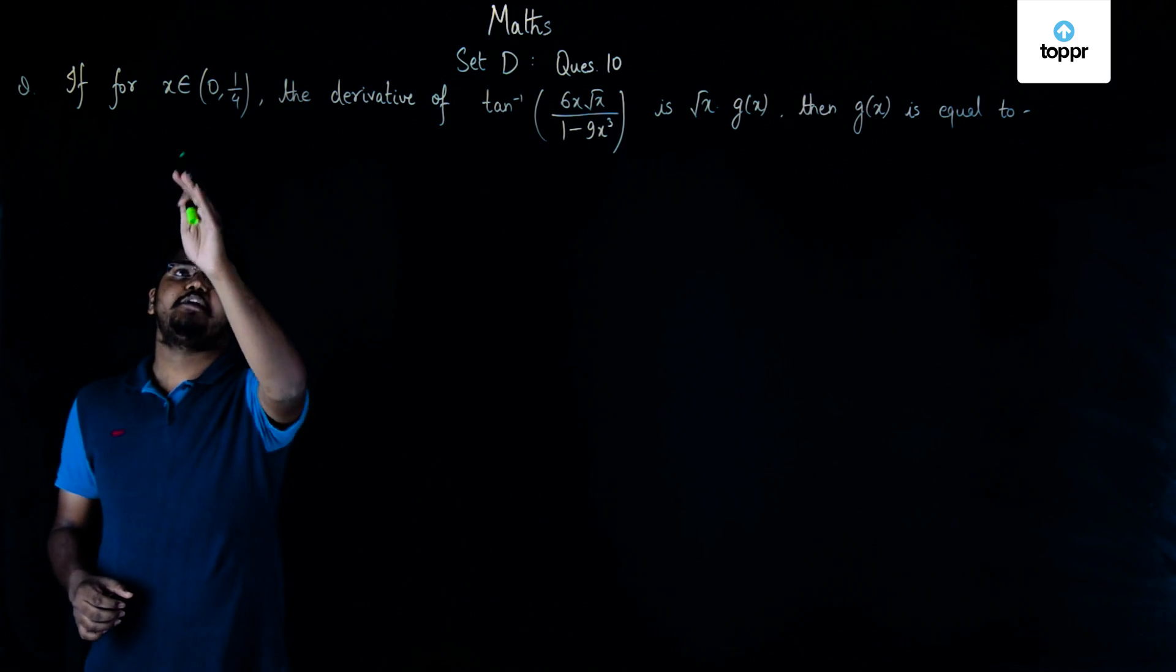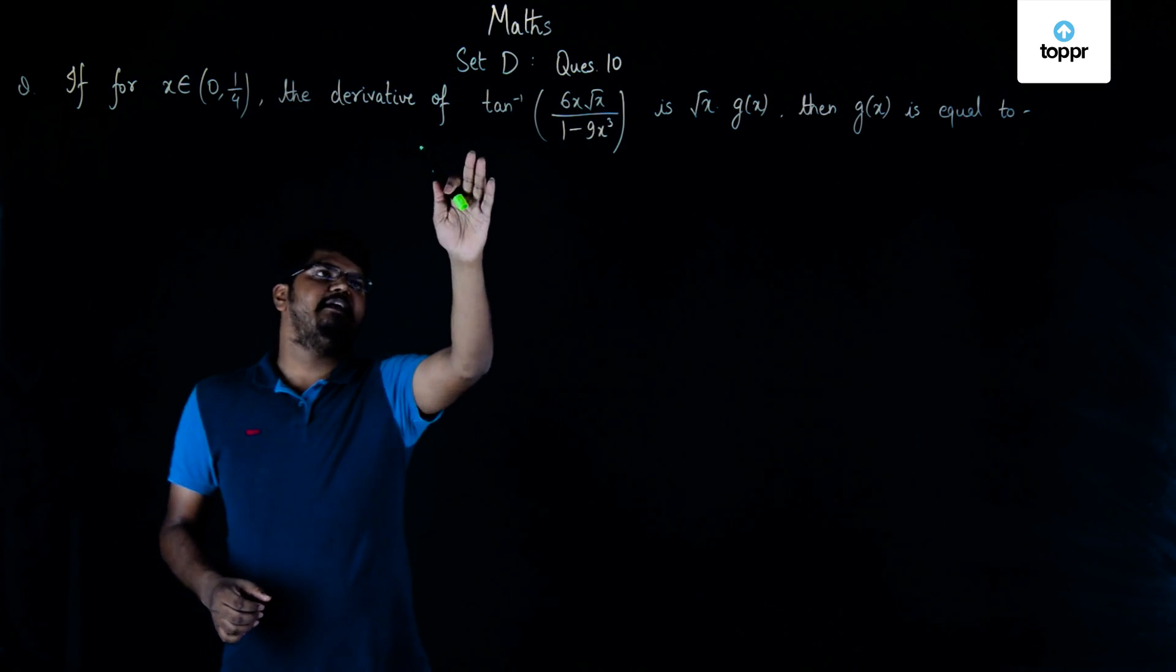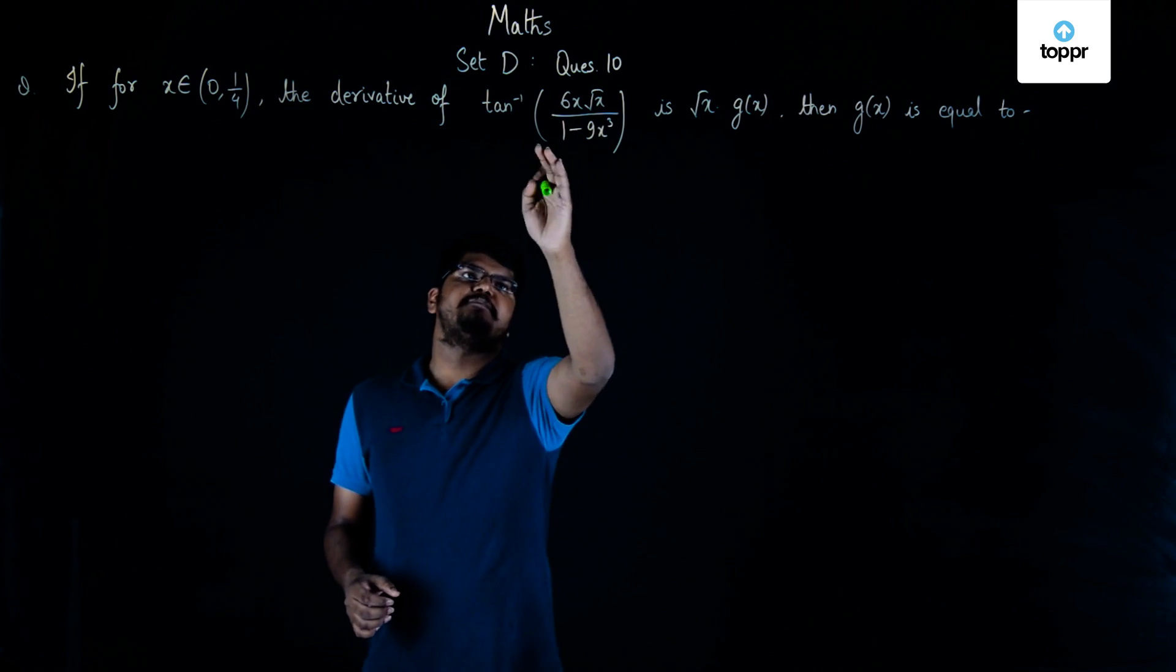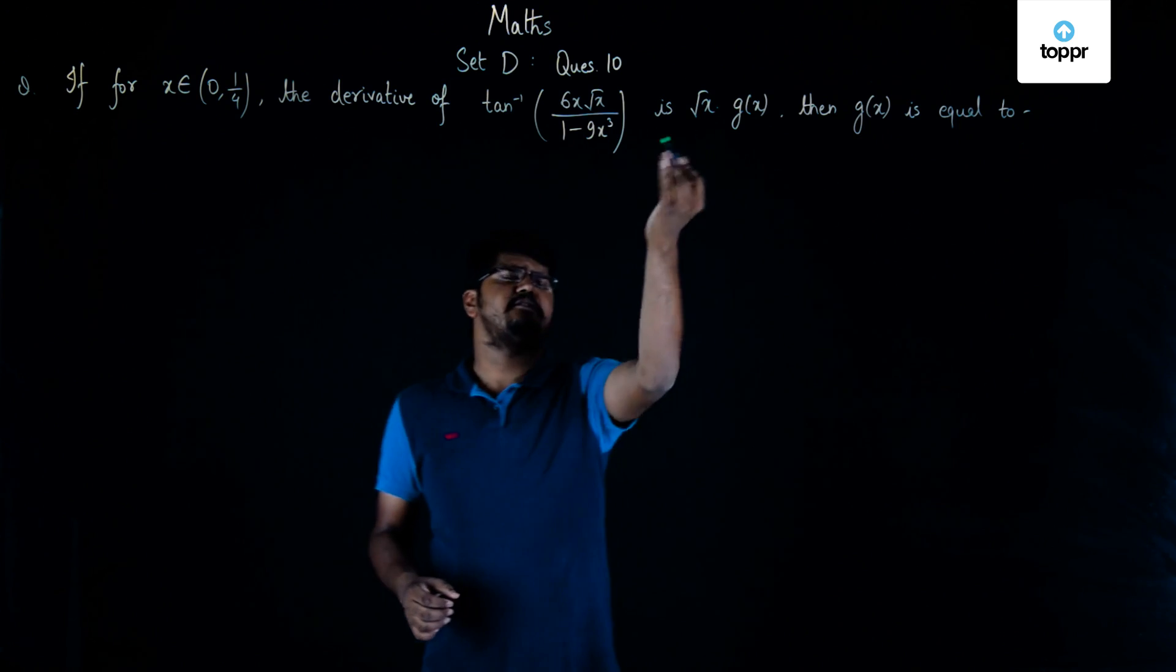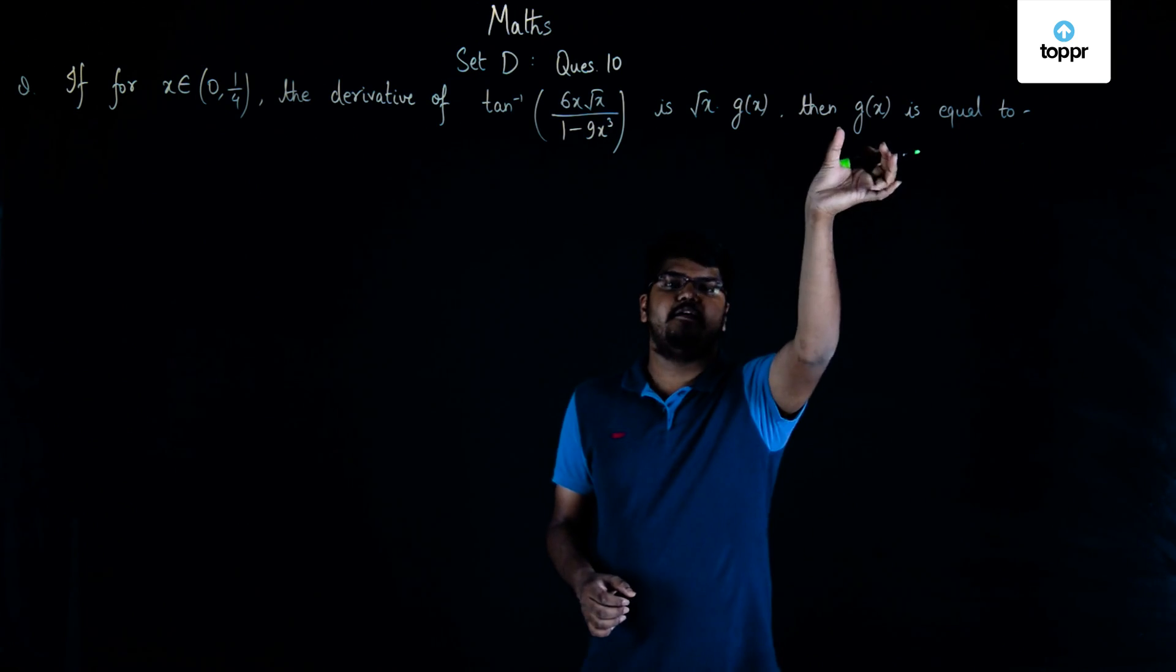The question is: if for x belonging to open interval (0, 1/4), the derivative of tan inverse (6x√x)/(1 - 9x³) is √x into g(x), then we need to find the value of g(x).